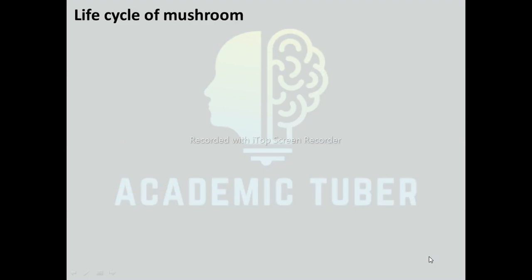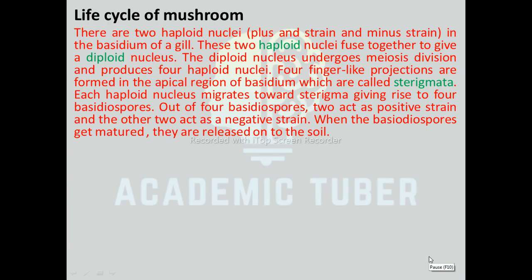Life Cycle of Mushroom. There are two haploid nuclei in the basidium of a gill. These two haploid nuclei fuse together to give a diploid nucleus. The diploid nucleus undergoes meiotic division and produces four haploid nuclei. Four finger-like projections called sterigmata are formed in the apical region of the basidium. Each haploid nucleus migrates toward a sterigma, giving rise to four basidiospores. Out of four basidiospores, two act as positive strain and the other two act as negative strain. When the basidiospores mature, they are released onto the soil.